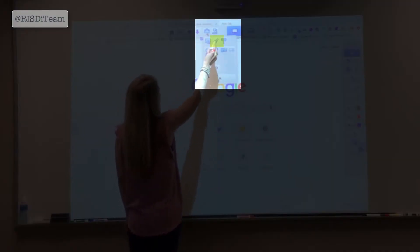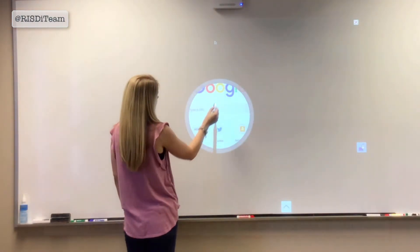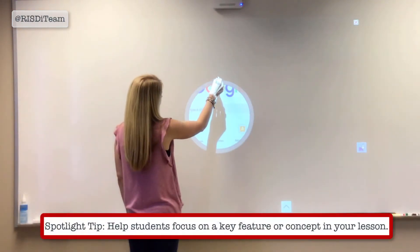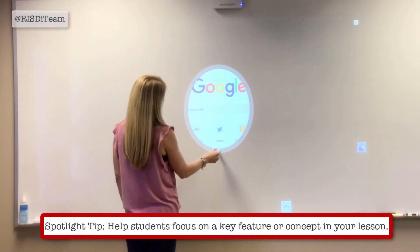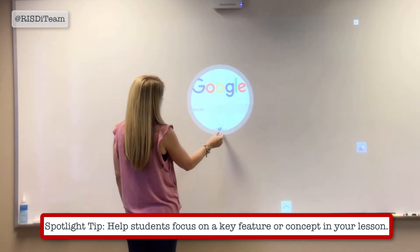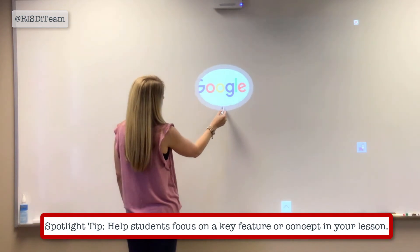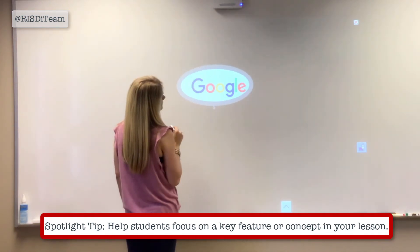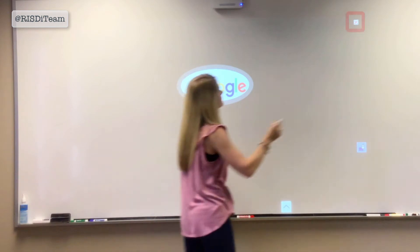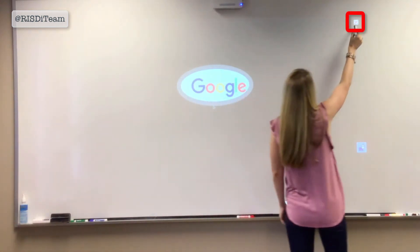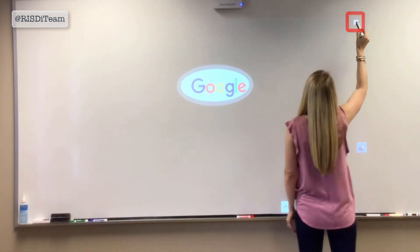The flashlight will give you a spotlight that appears on the screen. If you use the gray outer edge, you may resize and reshape the spotlight. Click on the X in the top right-hand corner to exit the tool.